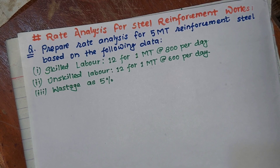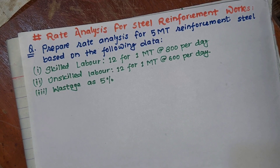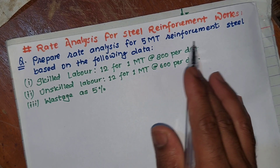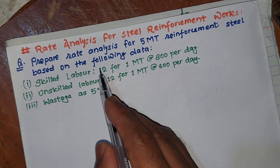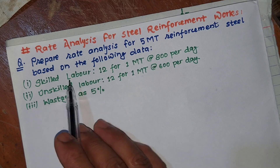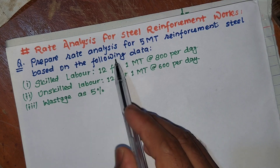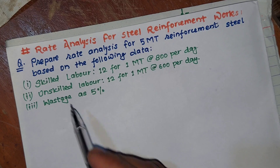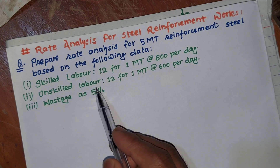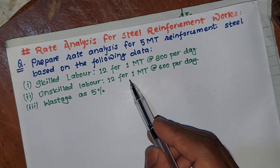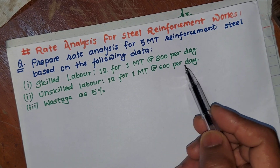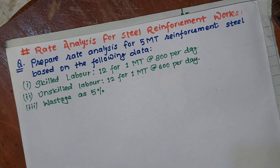I will ask you a question: Prepare a rate analysis for 5 metric ton reinforcement steel based on the following data. Skilled labor: 12 for 1 metric ton at the rate of Rs 800 per day. Unskilled labor: 12 for 1 metric ton at the rate of Rs 600 per day. Waste is 5%.